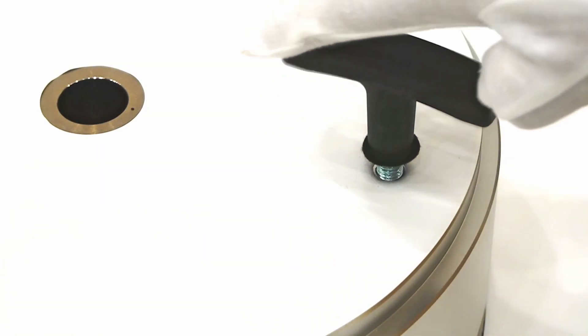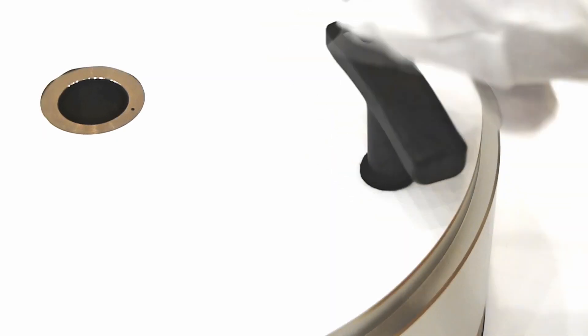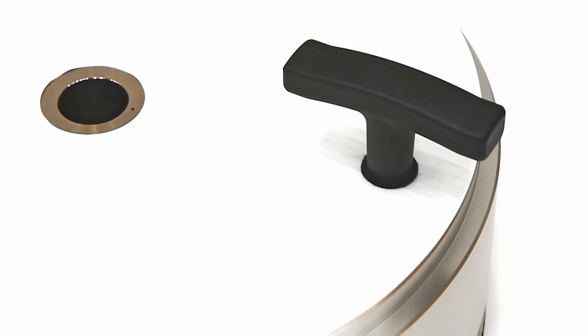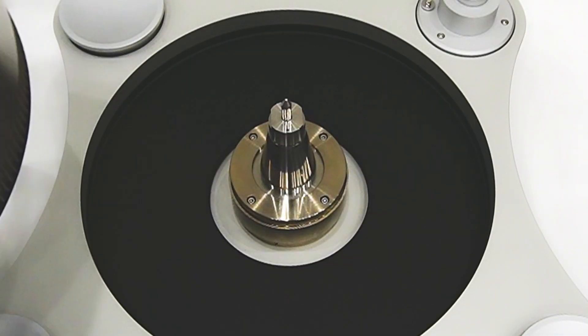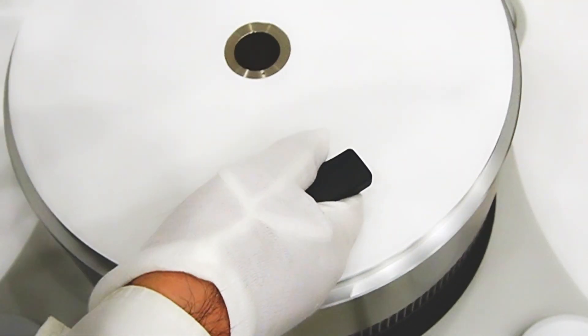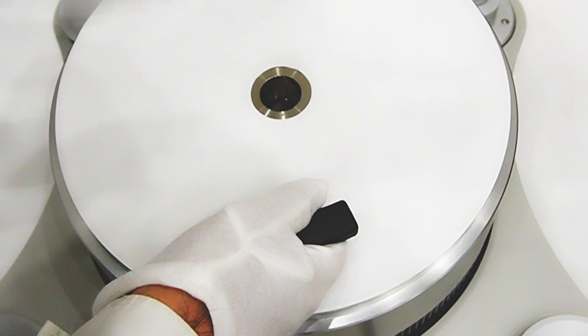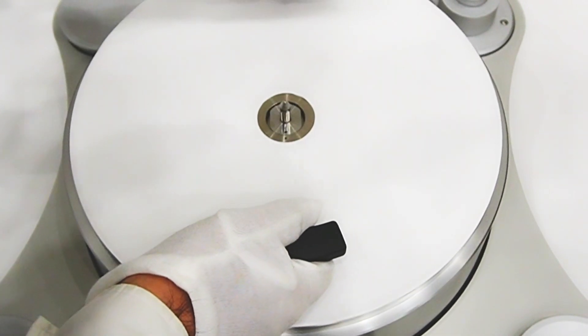First, we attach the supplied two handles to the platter. There is a marking on the platter and another marking on the spindle shaft. Carefully aligning these two markings, install the platter on the spindle shaft.